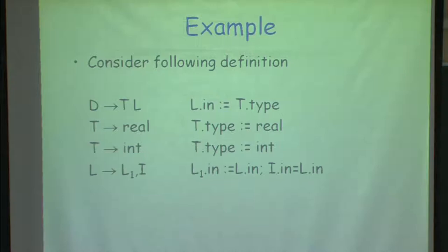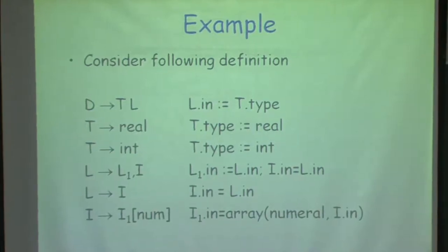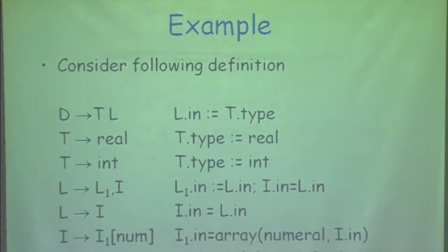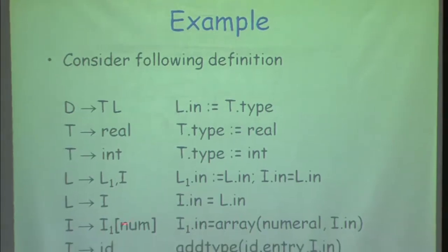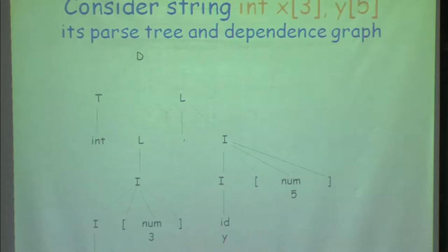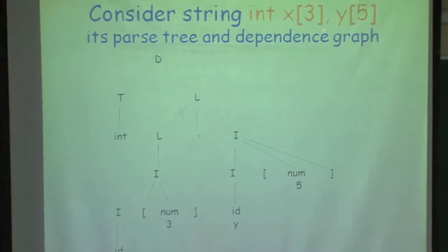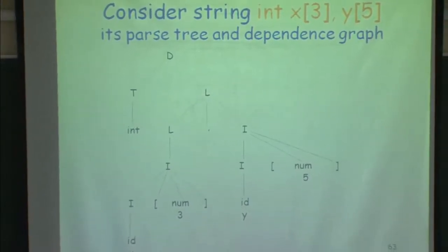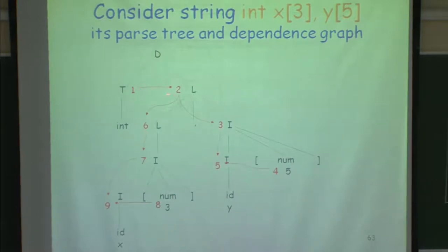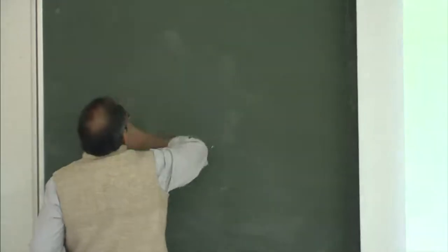The same thing applies to attributes. Attribute equations are similar to variable assignments — if I do not require an attribute beyond a point for computation, why keep it on the stack blocking space? I can use registers or other local locations. Lifetime begins when an attribute is first computed and ends when all attributes depending on it have been computed — then I release that location. Space can be conserved by assigning space to an attribute only during its lifetime. Let us look at a grammar similar to what we have done; I will show attribute computation and the dependence graph.